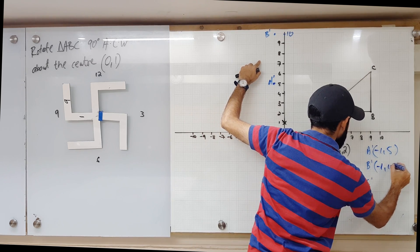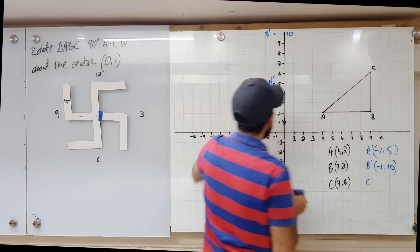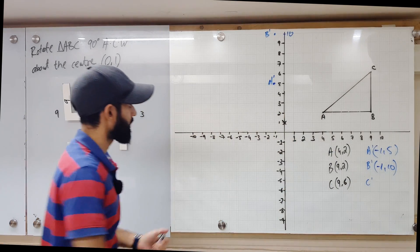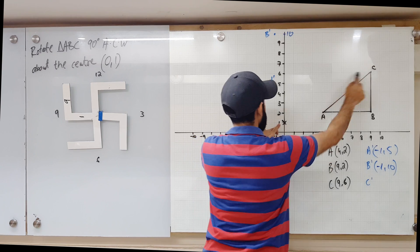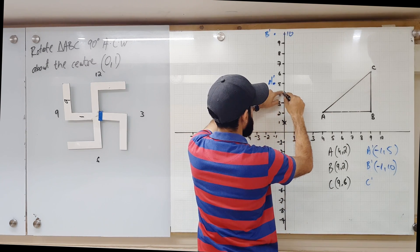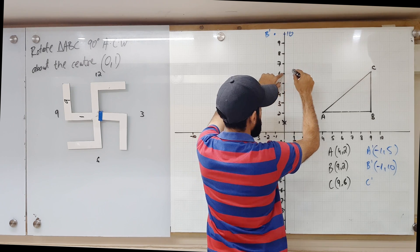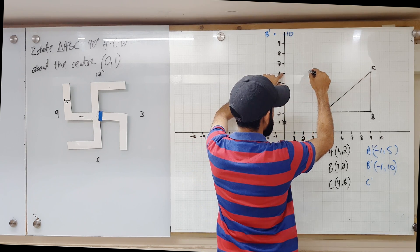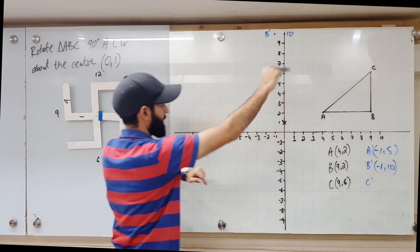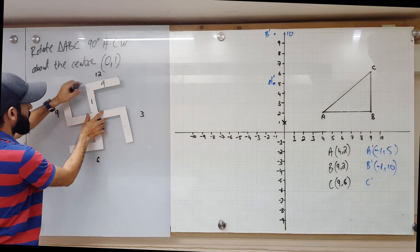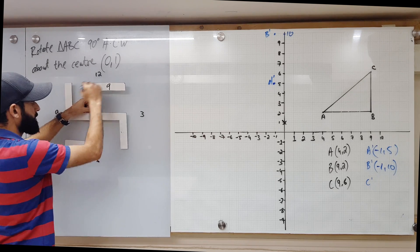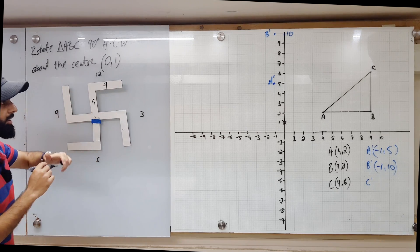One more to go. From the center, if I want to go to C, I have to go one, two, three, four, five — five up — and then one, two, three, four, five, six, seven, eight, nine — so five up and nine right. I'm just going to change this to five up and nine right.